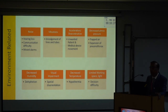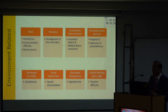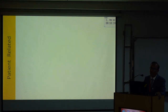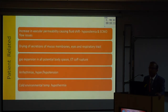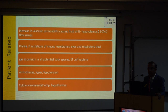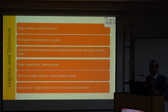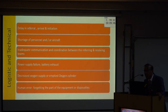Patient-related issues include dryness of secretions, gas expansion in potential tube spaces, more vascular permeability, ET tube rupture, atelectasis, and hypothermia in cold atmospheres. Logistic issues include delay in referral and arrival, shortage of personnel and aircraft, inadequate communication between referring and receiving teams, power supply failure, battery exhaustion, and human error — someone forgetting something and creating more problems.